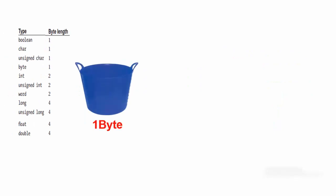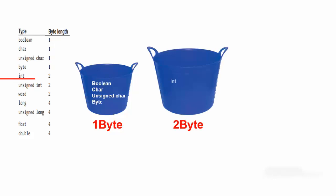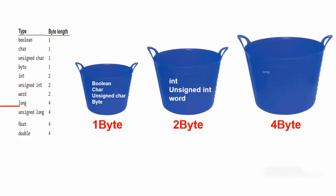According to this table, you can see that a one byte bucket could hold a boolean data type, character data type, unsigned character data type, or byte data type. A two byte bucket could hold an integer data type, unsigned integer data type, or a word data type. A four byte bucket could be used for a long data type, unsigned long data type, float data type, or double data type.